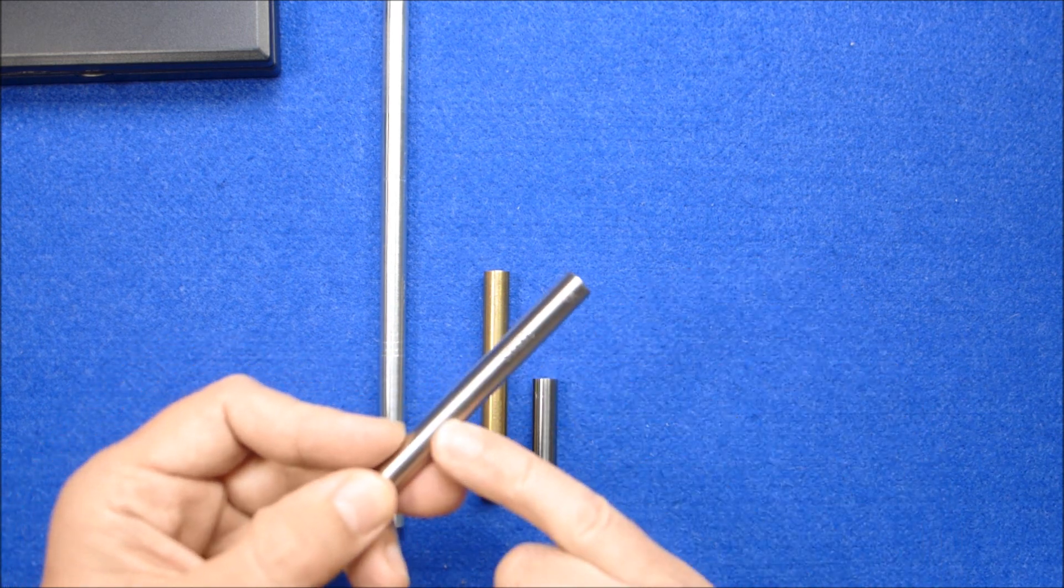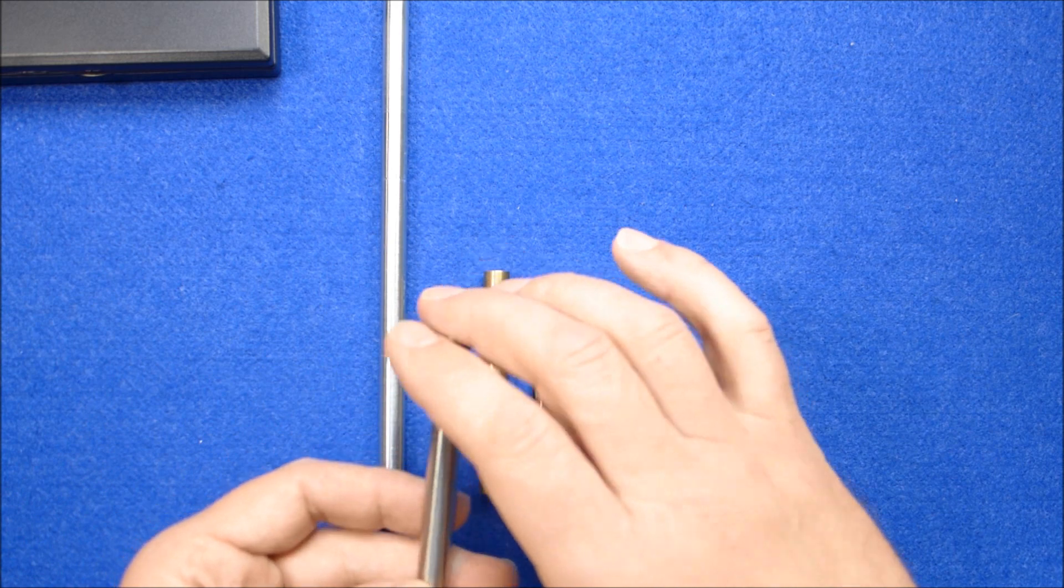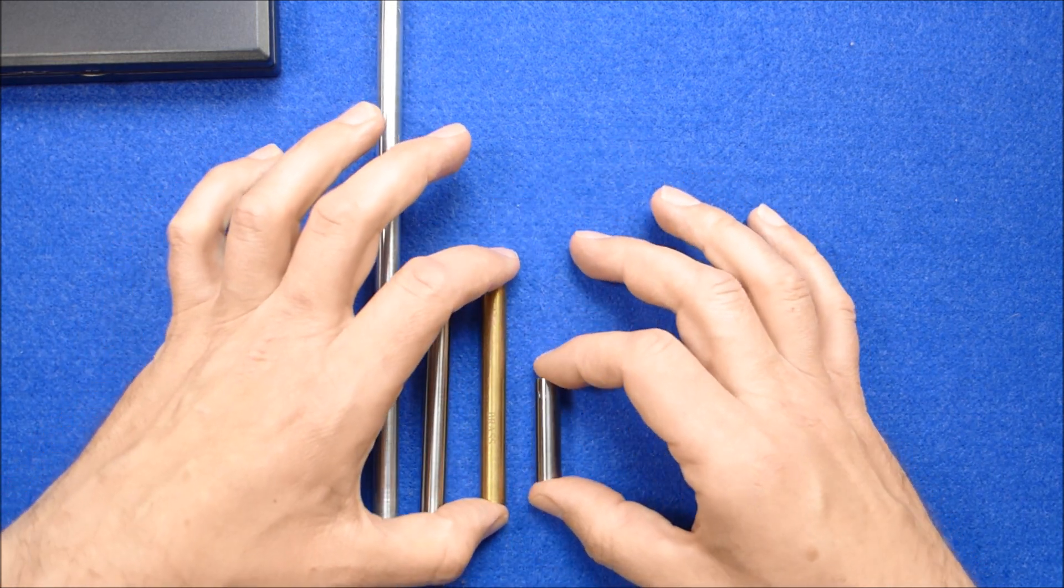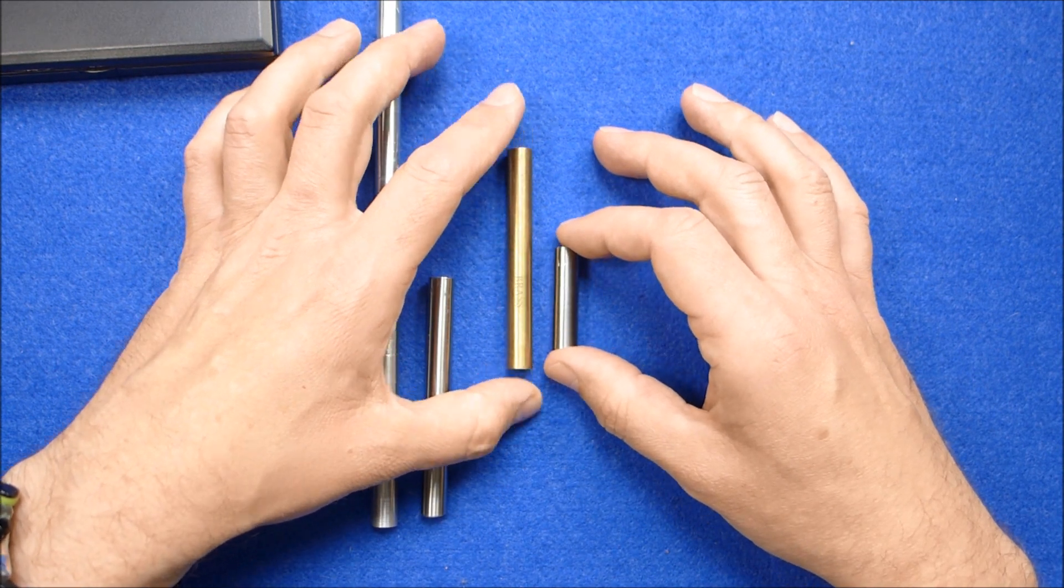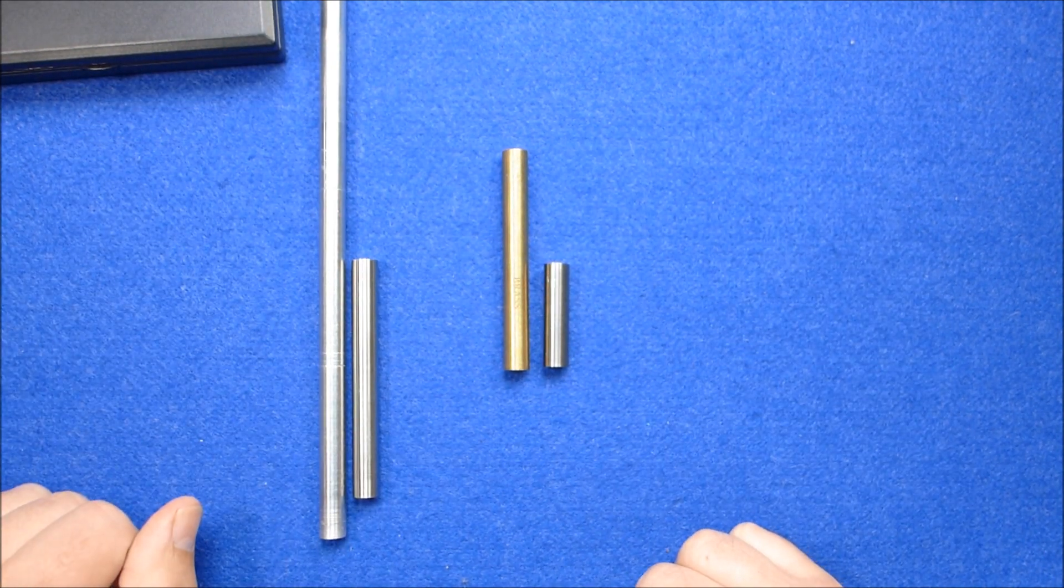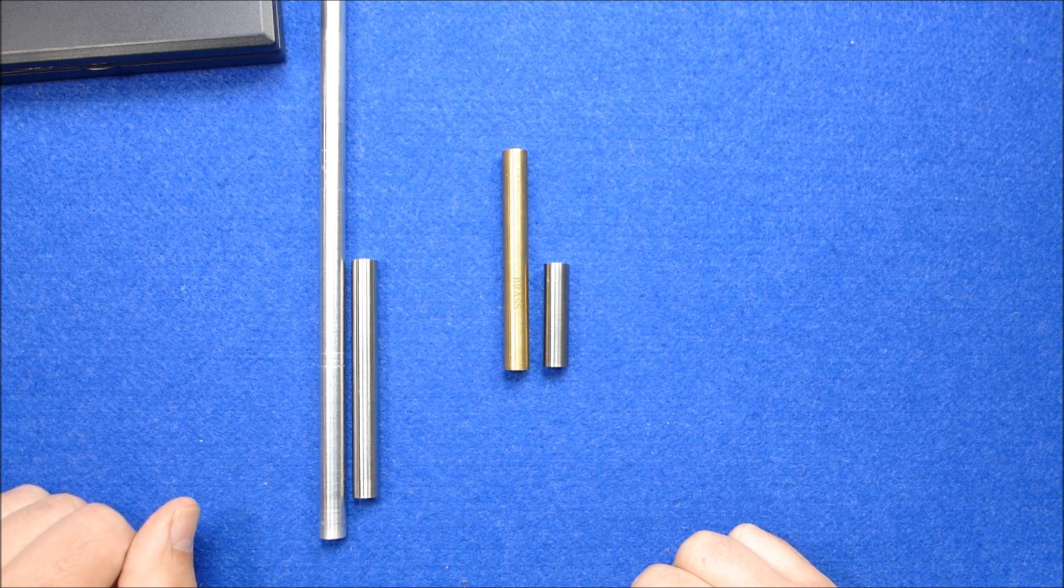You can still get darts made with steel and obviously you can still get darts made from brass, but you can see just from that the massive difference between brass and tungsten and why tungsten darts became so popular.